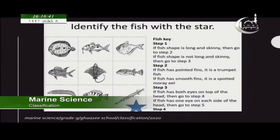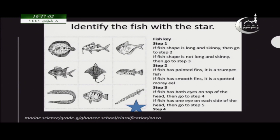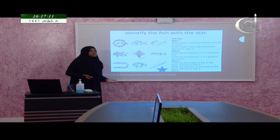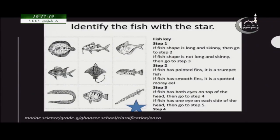Here you can see another example — how to identify fish. We are going to identify the fish with a star. When you get some organisms like this, all different types of fishes, you have to think of a question: what feature can you use to identify each organism? For example, their body shape may differ, they have different numbers of fins, their caudal or tail fin may be different, and the position of their eyes may differ.